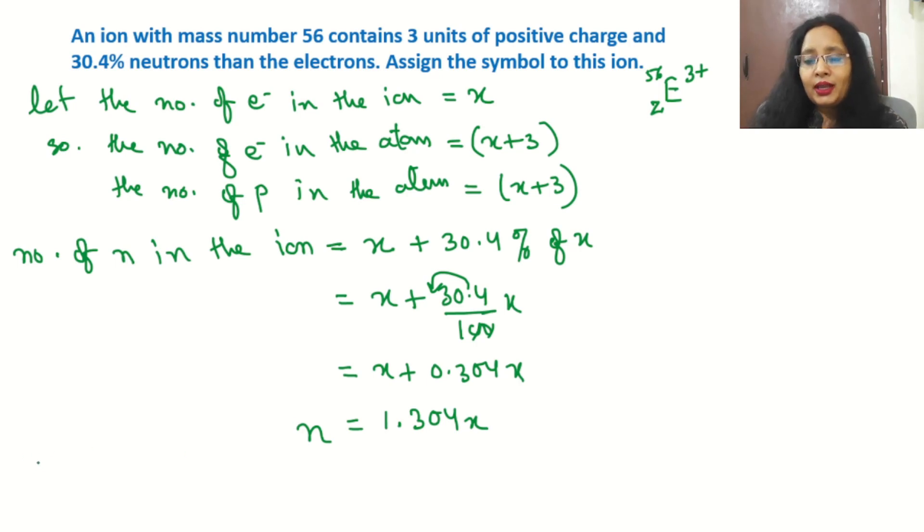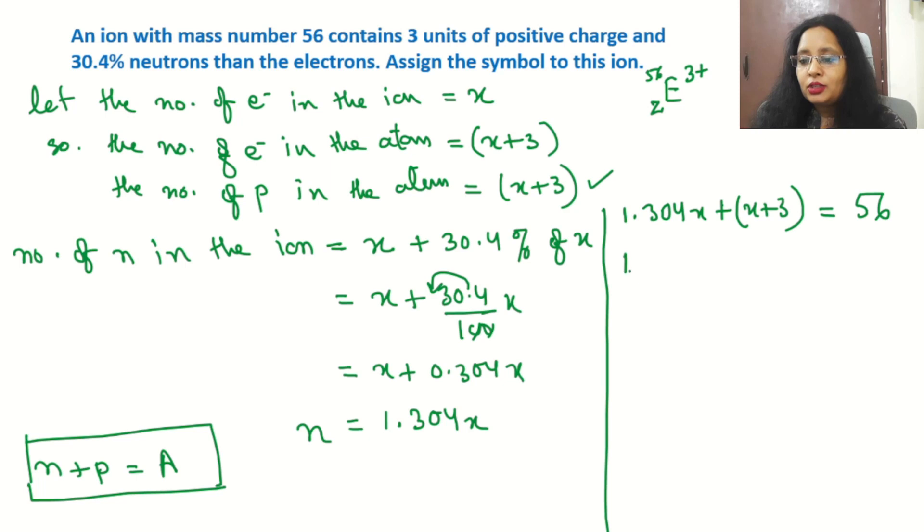We know that neutron plus proton is equal to mass number. So we have here neutron and proton value, mass number is given. Neutrons value is 1.304x, proton is equal to x plus 3. We will try to solve this, is equal to 56. Mass number is equal to number of neutrons plus protons in the atom.